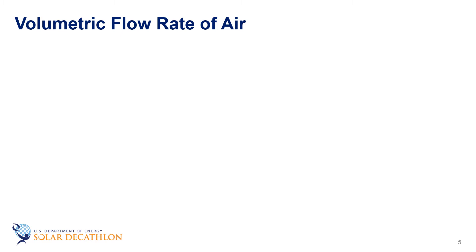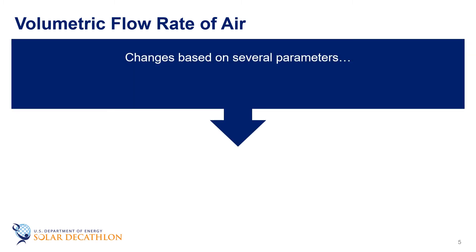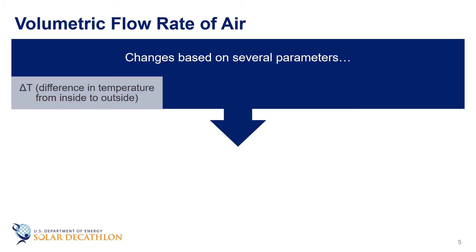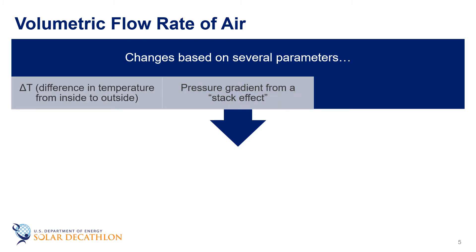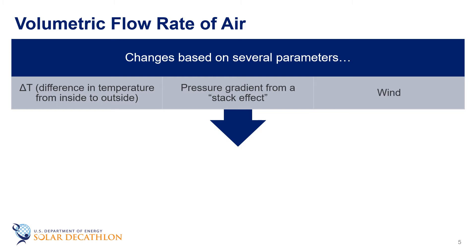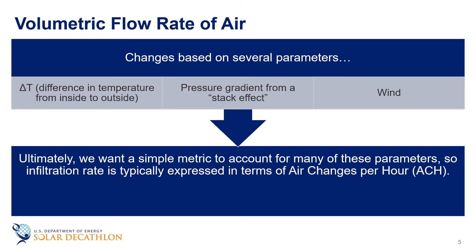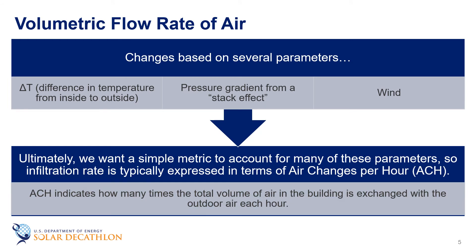As you can imagine, the volumetric flow rate of the air changes based on several parameters, including the change in temperature from inside to outside. You have what is called a stack effect. That is, air moving up through the structure and pressurizing the upper part of the structure, while drawing air in through the lower part of the structure. Wind also has an impact on the amount of infiltration that occurs in a building. That wind can be impacted by surrounding landscaping or other buildings. At the end of the day, we want a fairly simple number that can account for many of these things, and so we often talk about the infiltration rate, and we measure that rate typically in air changes per hour. That is how many times the total volume of air in the building is exchanged with the outdoor air each hour.